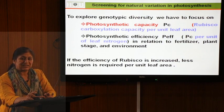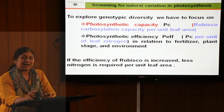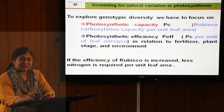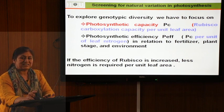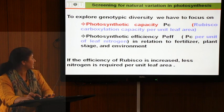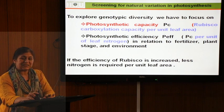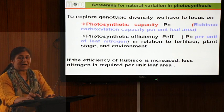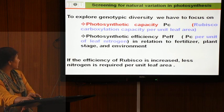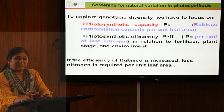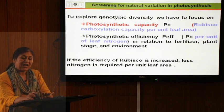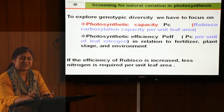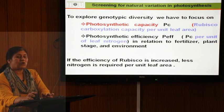How can we enhance photosynthetic efficiency? This can be done by screening natural variation in photosynthesis. We have a large germplasm collection at our university, and we can screen for accessions with a high rate of photosynthesis at both the biochemical and molecular levels. There are two key concepts: photosynthetic capacity and photosynthetic efficiency, and these must be understood clearly as they go simultaneously.